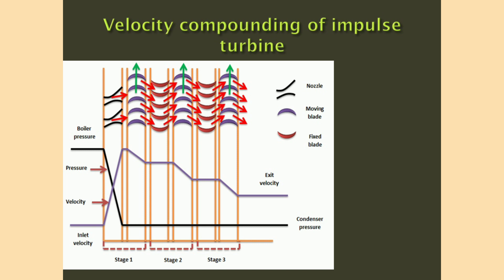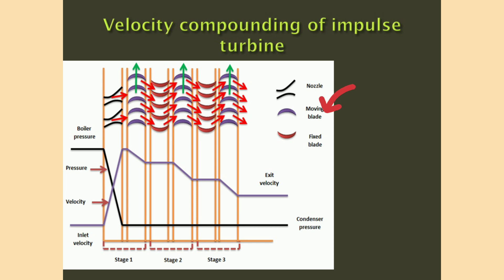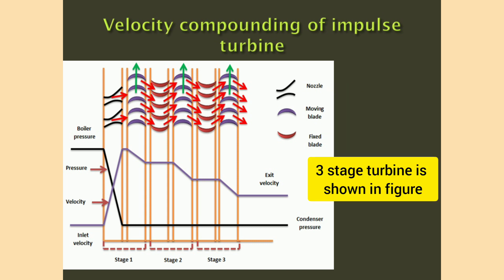Velocity compounding of impulse turbines: here, the velocity of the steam jet is regulated in stages, meaning kinetic energy is absorbed in stages. In velocity compounding, we use a nozzle, moving blades, and fixed or guide blades. Moving blades are shown in blue and fixed blades in maroon. A three-stage turbine is shown in the figure, consisting of a set of nozzles, three rows of moving blades, and two rows of guide or fixed blades.